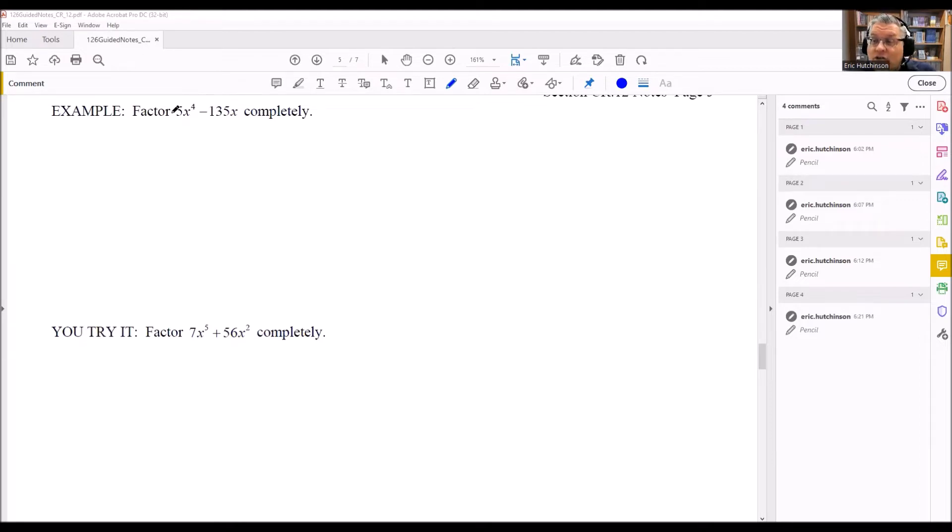So for this, if we look at the common factor, common factor would be something that both of these would be divisible by. So both of them are divisible by 5, and also both are divisible by x. So it means that our common denominator here is going to be 5x.